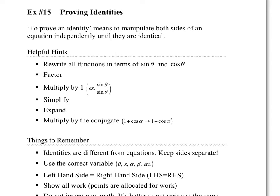Here are some helpful hints — things I can suggest to help you out that you might go back to if you're stuck. First, rewrite the function in terms of sine and cosine. Often if you write everything in sine and cos and simplify, you can come up with a good answer. Often factoring is something you need to do. Also, multiplying by one — for example, sine over sine — is useful, and we'll see different examples of that.